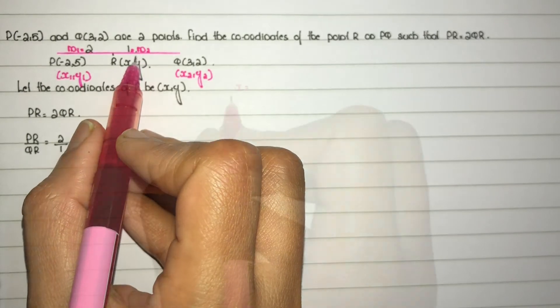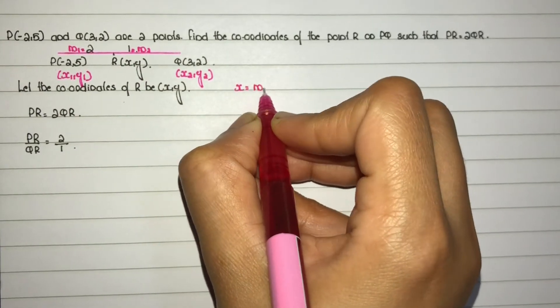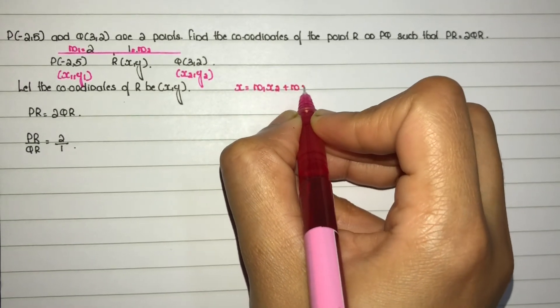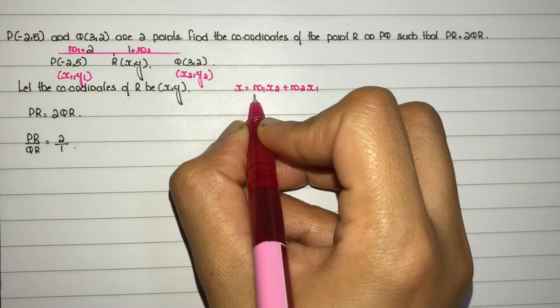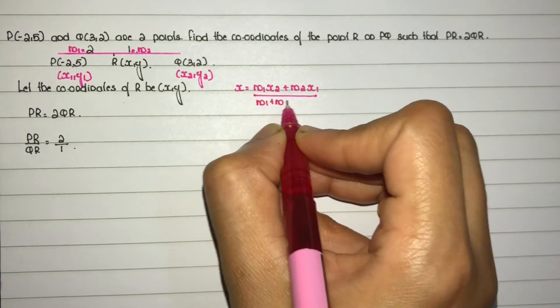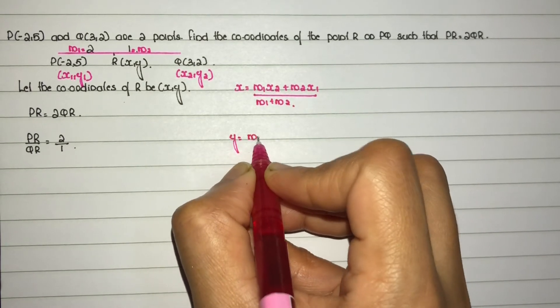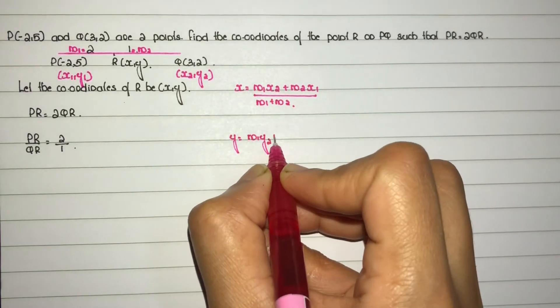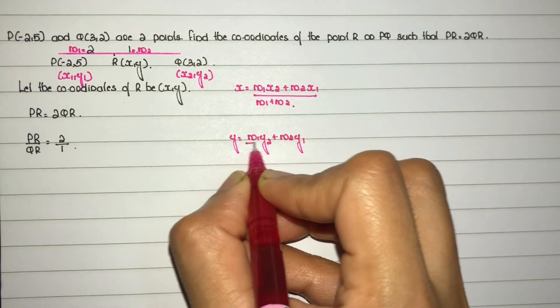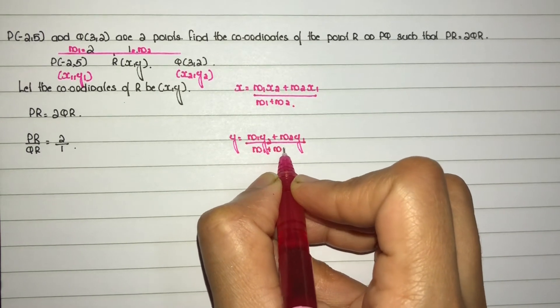The formula is: x equals (m1·x2 + m2·x1) divided by (m1 + m2), and y equals (m1·y2 + m2·y1) divided by (m1 + m2).